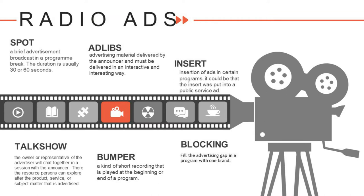Next is radio ads. There are several types of radio advertisements. First is spot — a brief advertisement broadcast during a program break, sometimes only 30 or 60 seconds long. Second is ad libs — advertising material delivered by the announcer, which must be delivered in an interactive and interesting way to gain more listeners. Third is insert — the insertion of ads into certain programs, which could also be inserted as a public service ad.